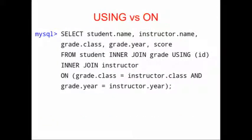In addition to using the word USING, we can use the word ON. USING relies on the fact that there are two columns, one in each table, that are called the same thing and have the same data type. If those conditions are true, we can use that column to join our two tables together. Instead of USING, we can use ON, which allows us to specify exactly which columns we'd like to use in our join. For example, we can do an inner join ON grade.class equal to instructor.class, and ON grade.year equal to instructor.year.